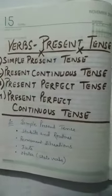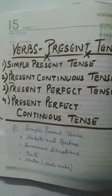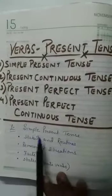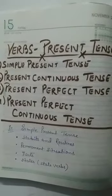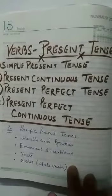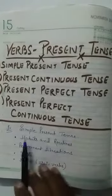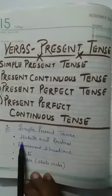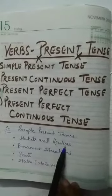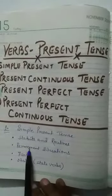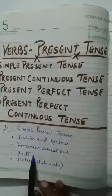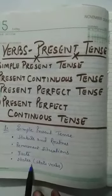So, first of all, today we will take the simple present tense. In this simple present tense, it is used to talk about habits and routines. It also talks about permanent situations, facts and states.